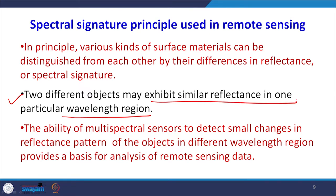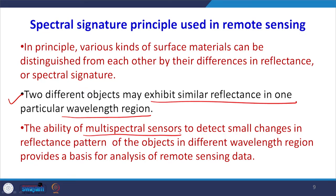Two different objects may also exhibit similar reflectance in a particular wavelength region, making that region not useful for identifying those features. We must extend the wavelength region to find where two different objects give different spectral reflectance. Multi-spectral sensors are designed to detect small variations in reflectance pattern as a function of wavelength, recording all variation. This is why most remote sensing satellites employ multi-spectral sensors providing data in more than one spectral region.